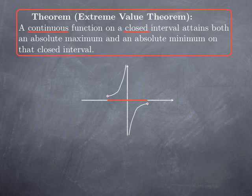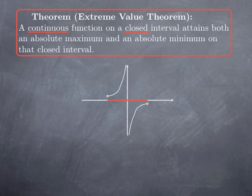It is easy to convince yourself that the condition of continuity is essential as well. For instance, where you have one discontinuity over the closed interval where the function has a vertical asymptote, and would go to positive infinity on one side, negative infinity on the other, and therefore it has no maximum and no minimum.